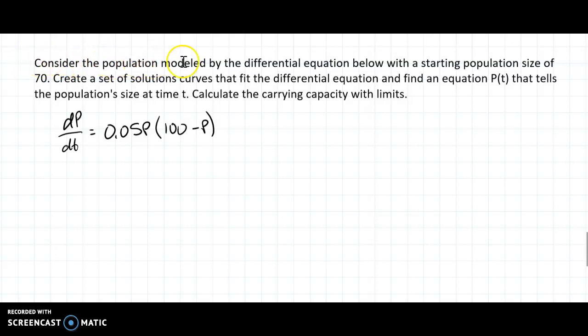In this problem, I want you to consider a population modeled by this differential equation with a starting population size of 70. That means that P(0) = 70.